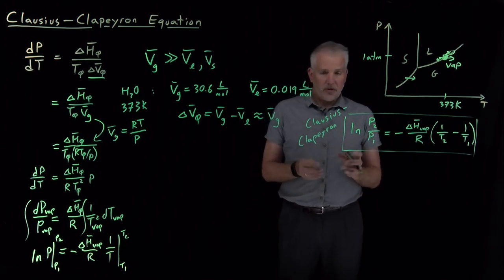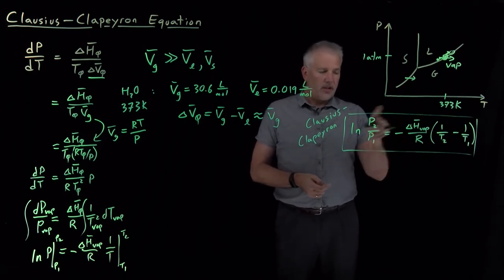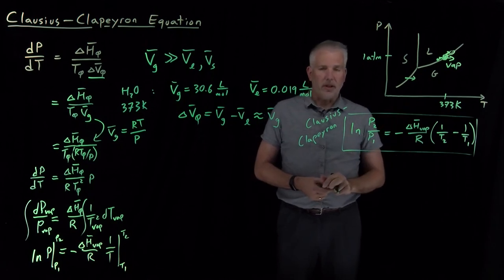So, under certain special conditions, the Clapeyron equation takes this form, which we call the Clausius-Clapeyron equation.